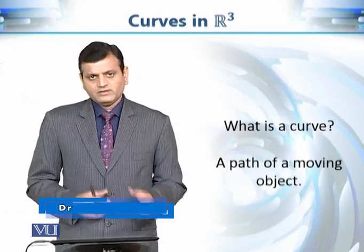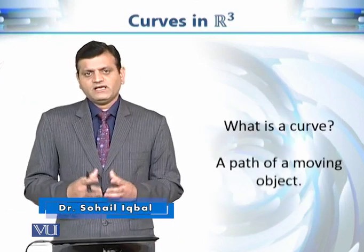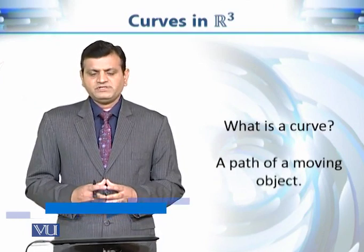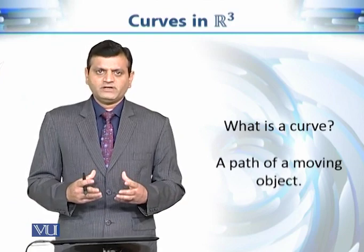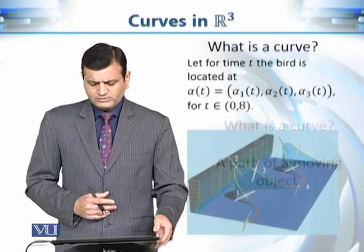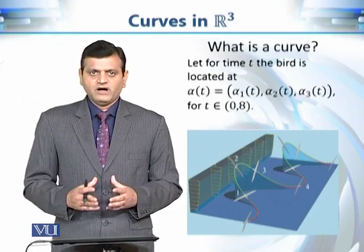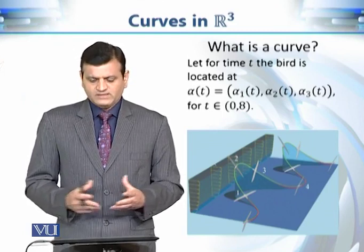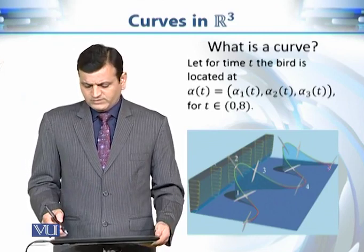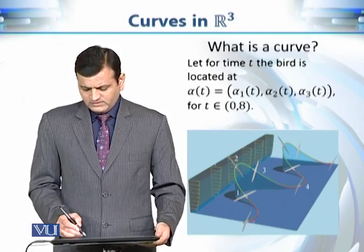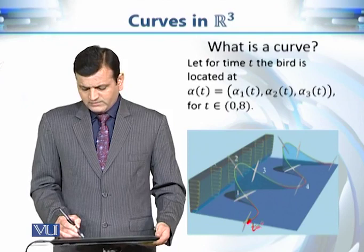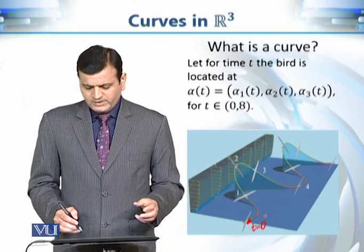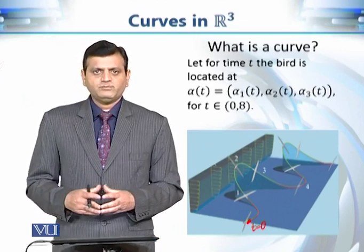Now the question is: what is a curve in R³? We can say that a curve in R³ is basically the path of an object, for example a flying bird. So let's consider the trajectory or path of a flying bird. If we introduce the coordinate axes and want to discuss the path of this flying bird, we can say that at any point — say at t equals 0 — the bird has some position.